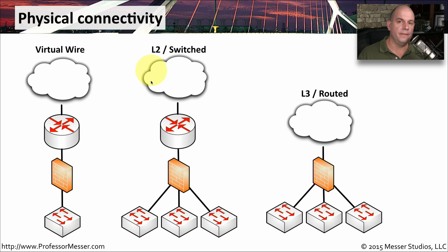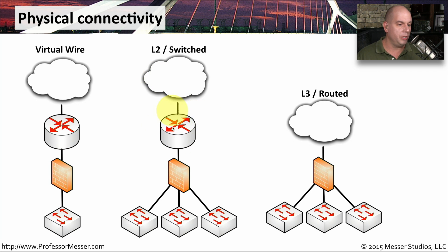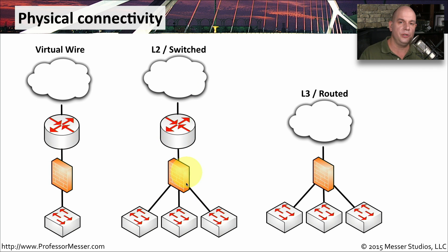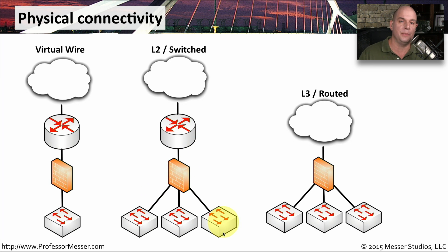Another way to configure a firewall is as a layer 2 device, or as a switch. This is the same as putting a physical switch in your network, except now this switch is also a firewall. Here's a scenario where we're still using our router to connect to the outside world, and the firewall acting as a layer 2 device takes all the traffic from one switch and switches it on to other switches elsewhere in the organization.